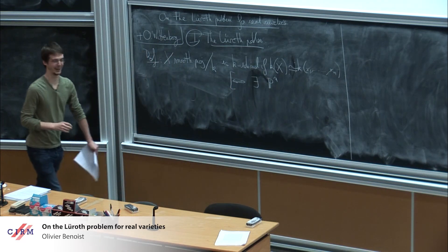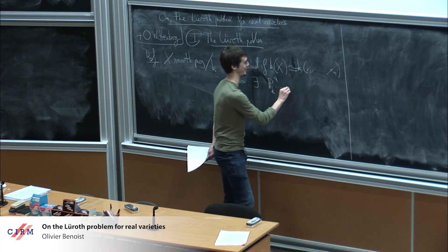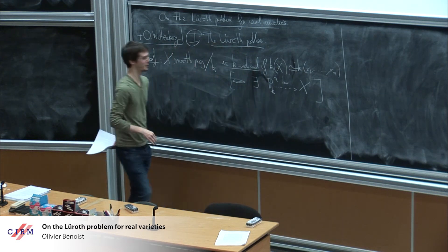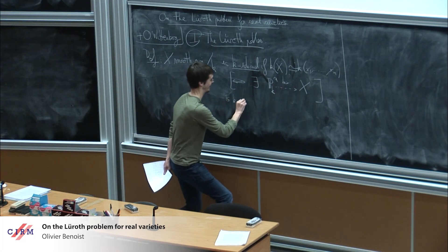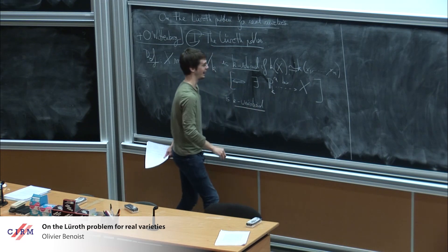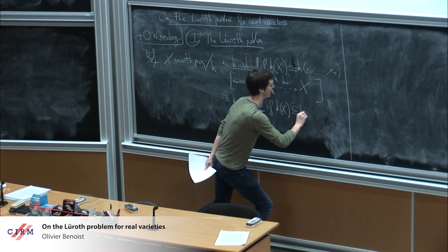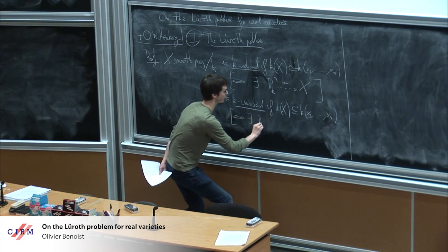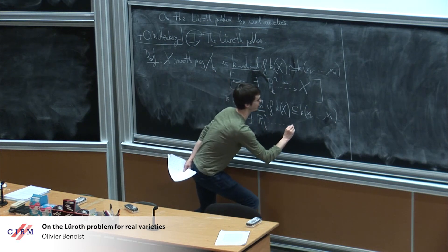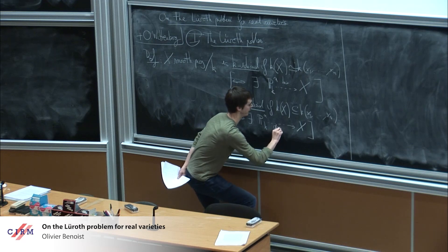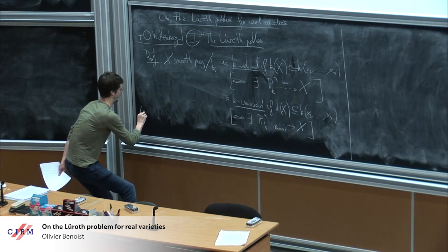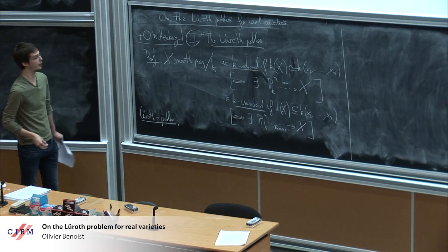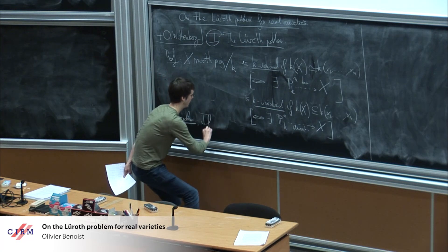The function field is isomorphic to a purely transcendental function field, which is equivalent to the existence of a birational map from projective space to X. The second notion is k-unirationality: the function field of X is a subfield of a purely transcendental function field, meaning there exists a dominant rational map from projective space to X. The Lüroth problem is to decide whether k-unirational varieties are always k-rational.